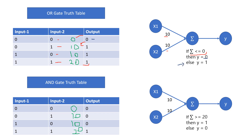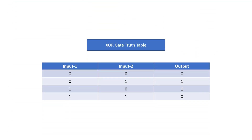For the AND gate perceptron, we need output one only for the last input test case, where the summation value is 20. The minimum value before that is 10, so we put the condition: if summation is greater than or equal to 20 then output is 1, and for all other remaining cases the output is 0. Now let's discuss the truth table for the XOR gate. For XOR gate: input (0,0) gives output 0, (0,1) gives 1, (1,0) gives 1, and (1,1) gives 0.